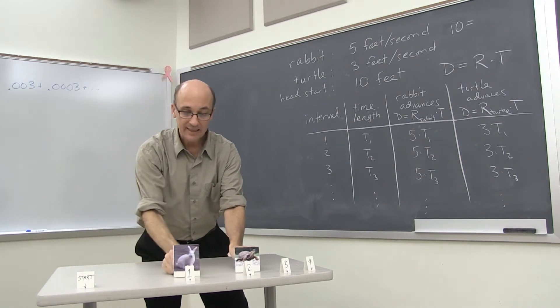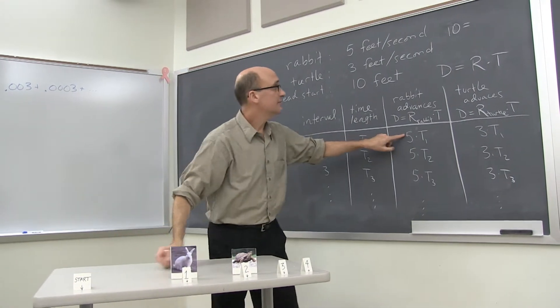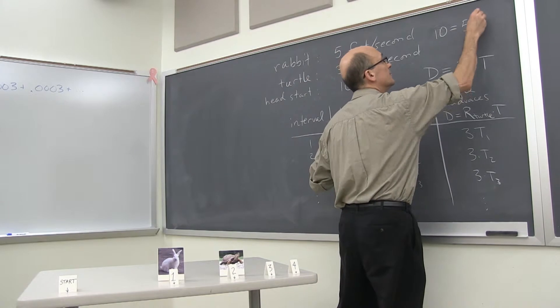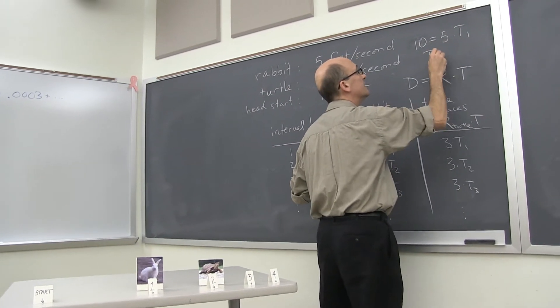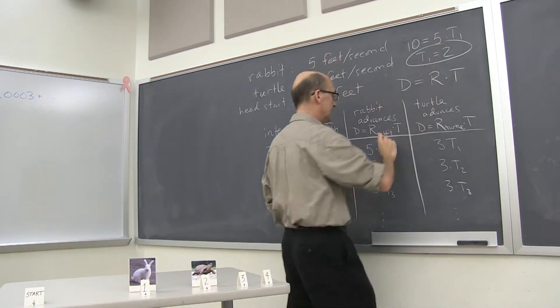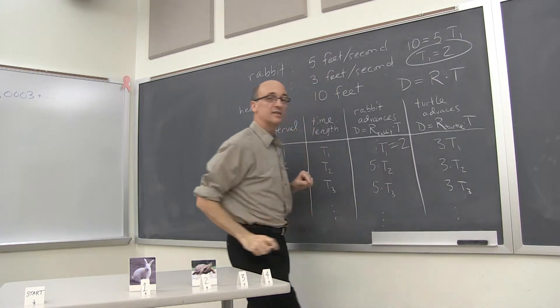That's from here to here. That is the same thing as five times T1. So we've got T1. T1 has to be two. So we figured out the first number.